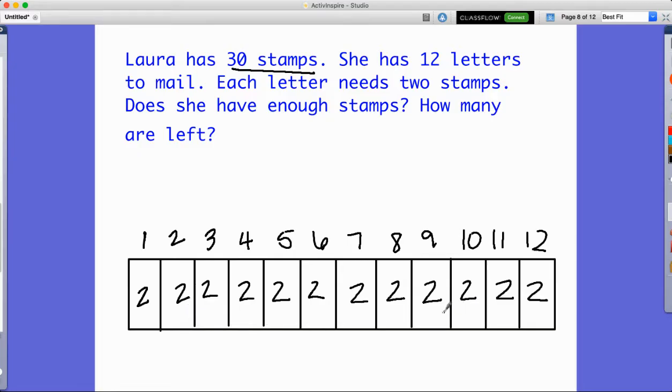So now what I'm going to do is count these up and just skip count by two to help me. So two, four, six, eight, 10, 12, 14, 16, 18, 20, 22, 24.